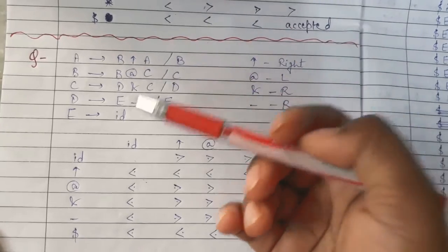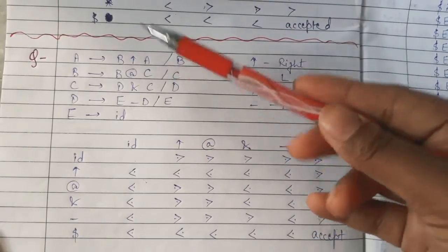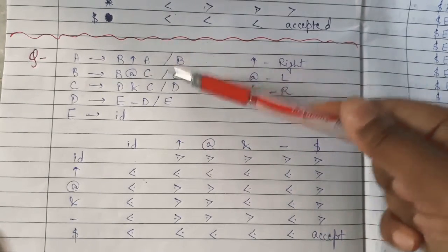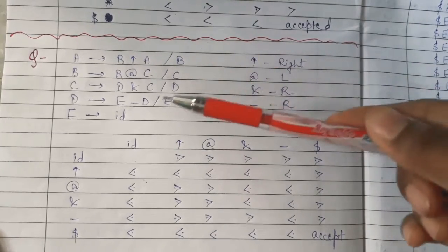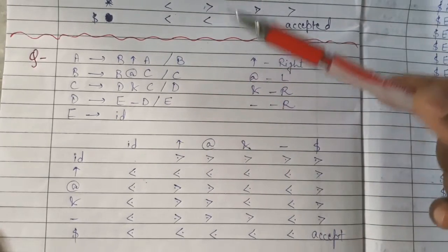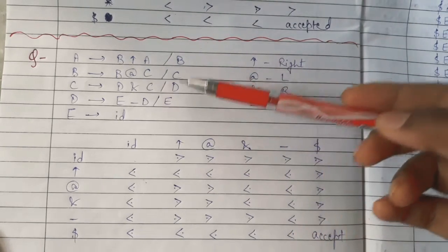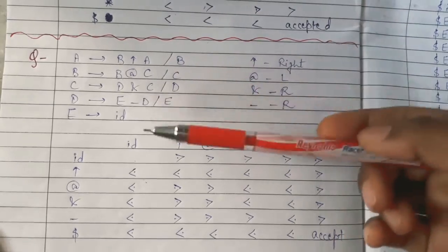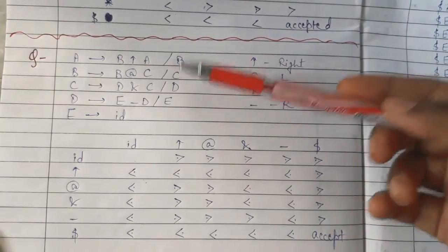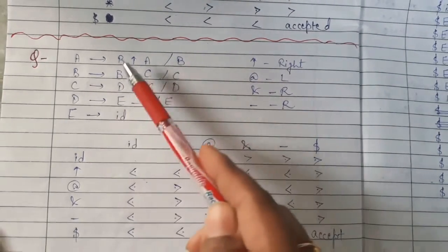One of the biggest specialities of this grammar is that the operator precedence parser is the only parser that can parse ambiguous grammar. All other parsers are only able to parse unambiguous grammar, but this parser can parse both ambiguous as well as unambiguous grammar. That is the specialty of the operator precedence parser.